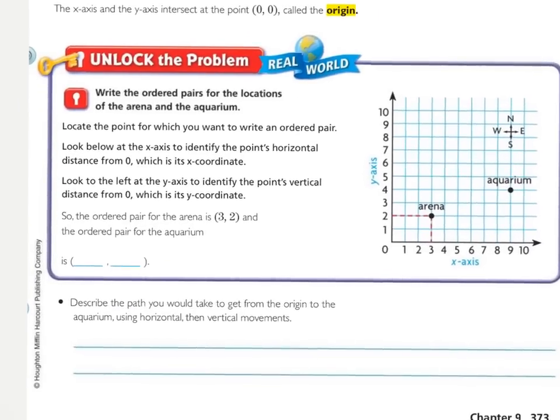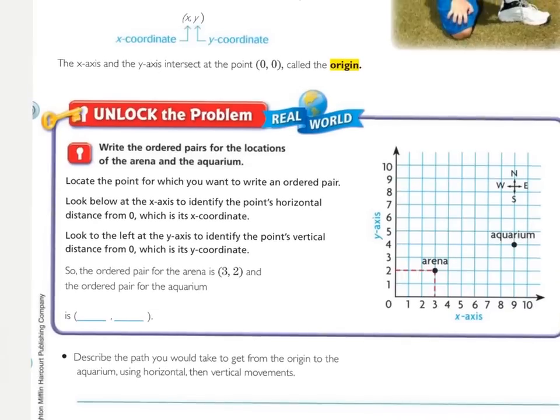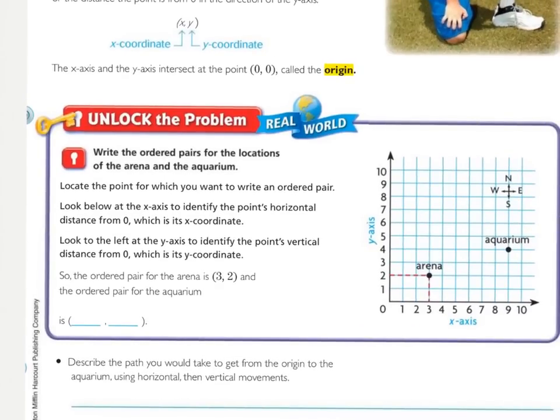Now let's look at unlock the problem. It says to write the ordered pairs for the locations of the arena and the aquarium. We need to locate the point for which we want to write an ordered pair. And then we need to look at the x-axis to identify the horizontal distance from 0. That just means left or right, and that'll be our x-coordinate. Let's start with the arena. Where's the arena? There's the arena. The arena's right here.